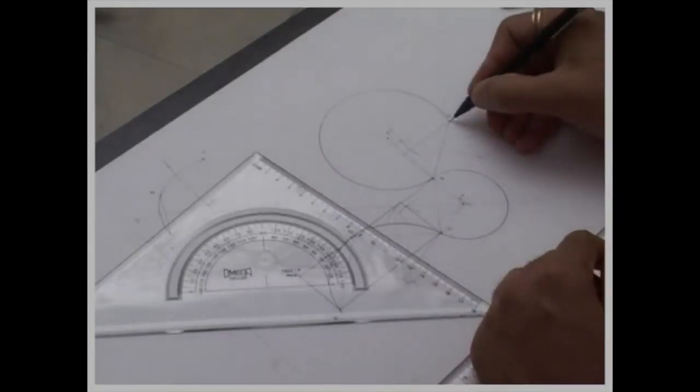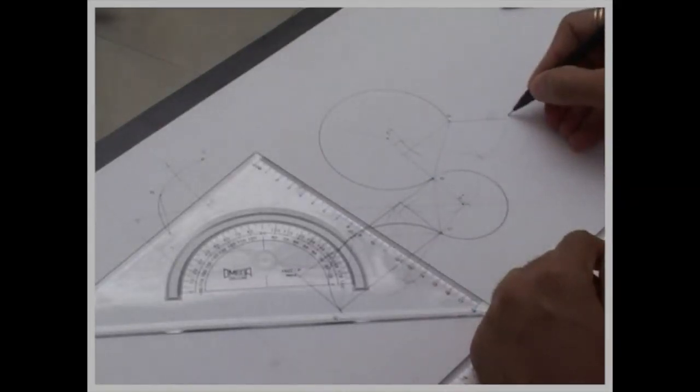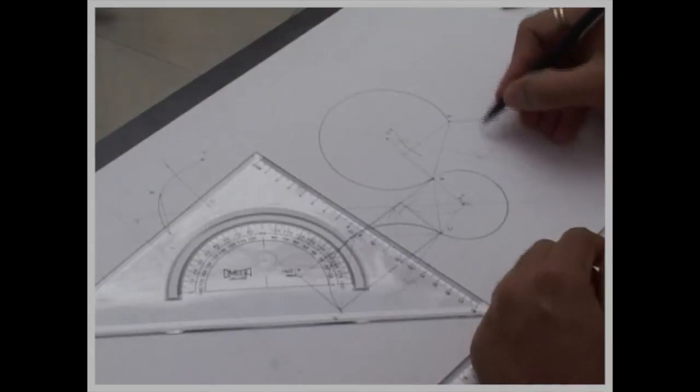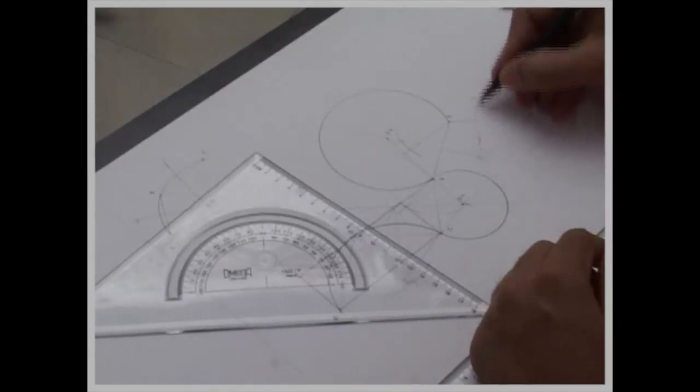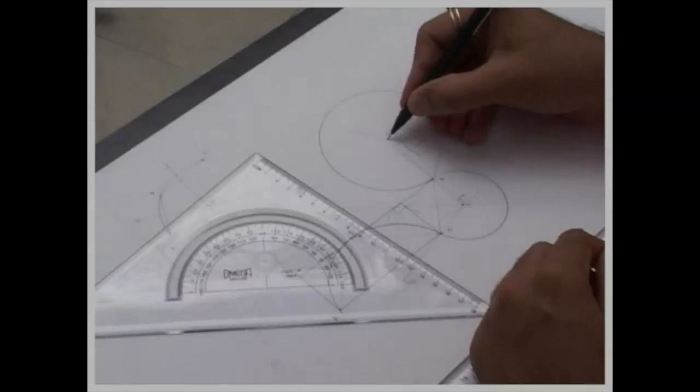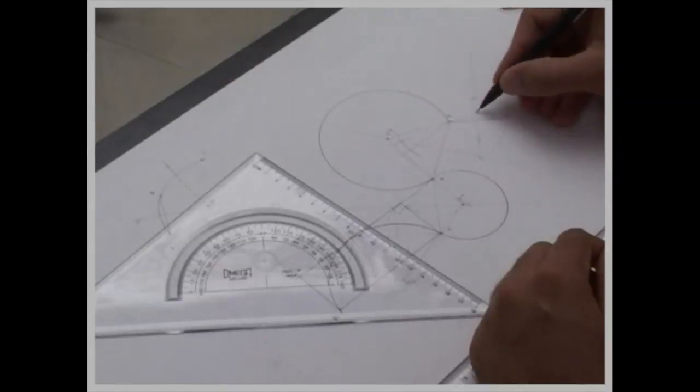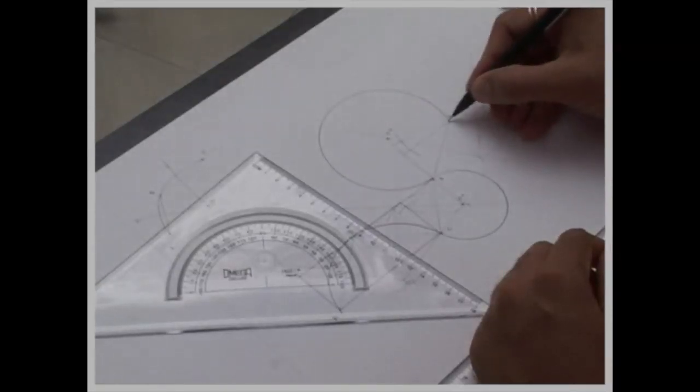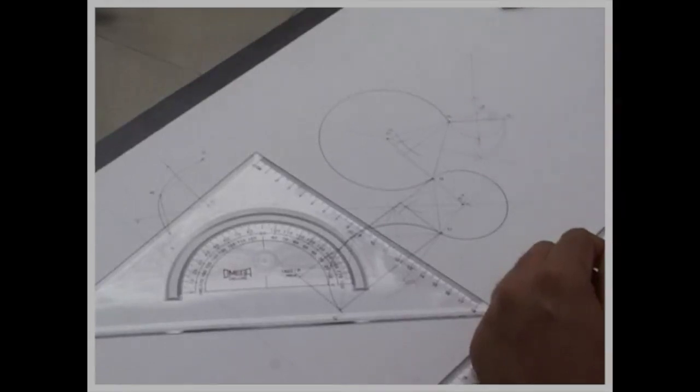The same way we can draw point f. Again same procedure - you bisect e f, O3 e, extend, you will get O4. Again you can draw arc. So this way we can draw a continuous arc.